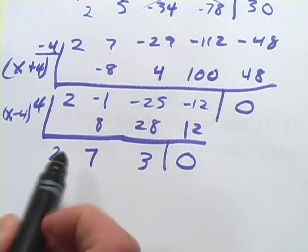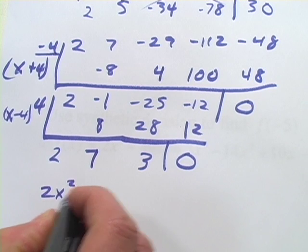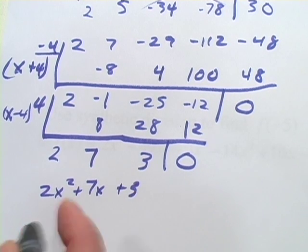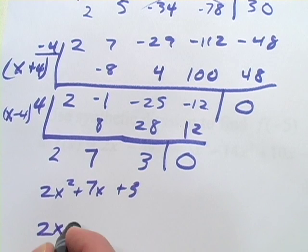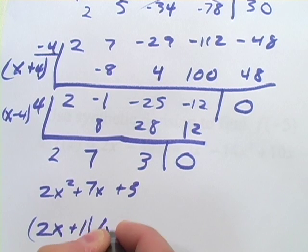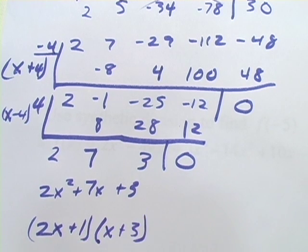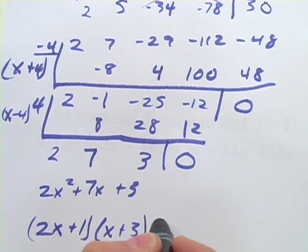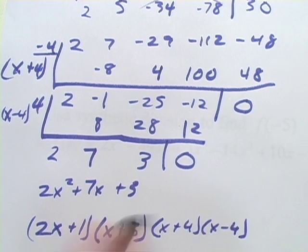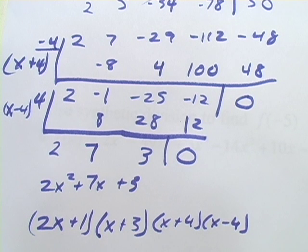And we're down to our quadratic. We've got 2x² + 7x + 3. And let's see, I think this will factor too. So 2x + 1 and x + 3. Does that do it? Yeah, I think it does. And then I'll add our other factors in here. We had x + 4 and x - 4. So that is how you go about factoring fourth-degree polynomials using the rational roots test and some synthetic division.